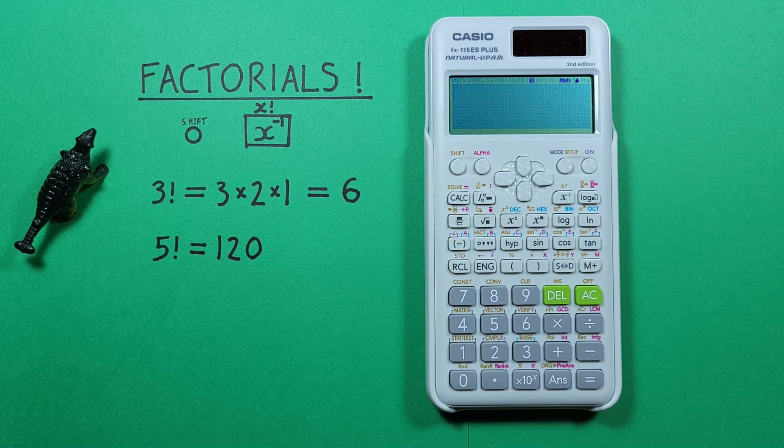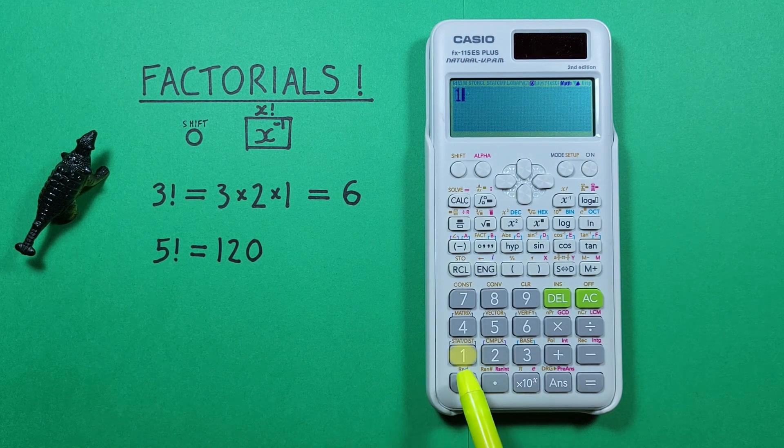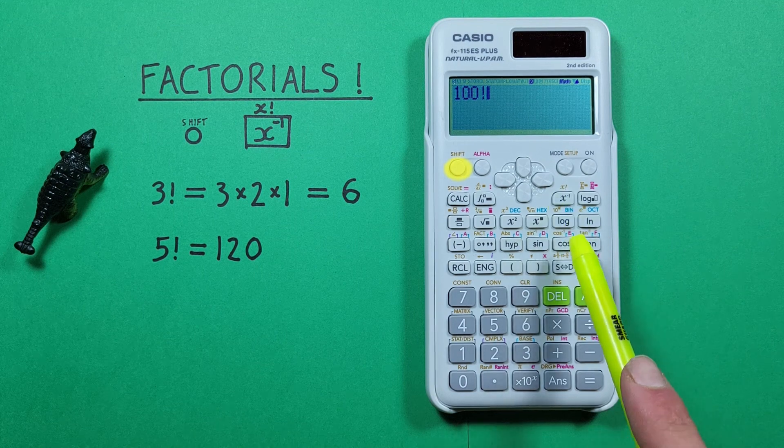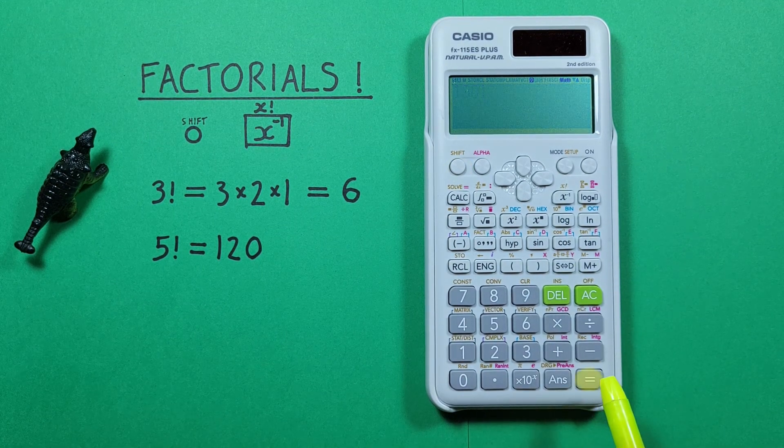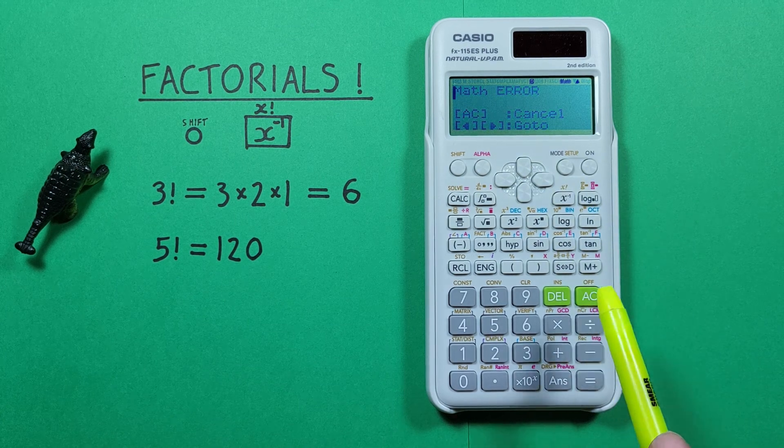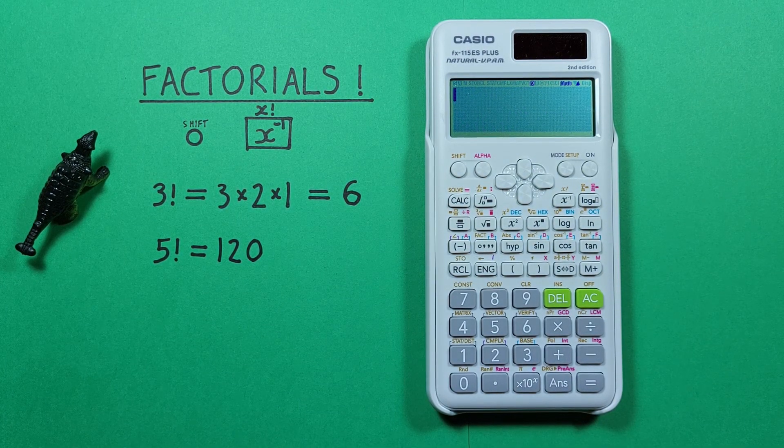But what happens if we're trying to do a very large factorial like let's say 100 factorial? If we press equals now we'll get a math error on our calculator. That's because the result of 100 factorial is just too large for this calculator to display.